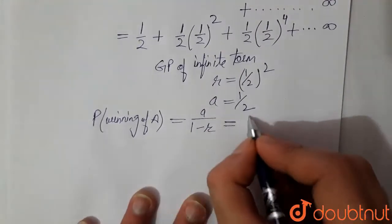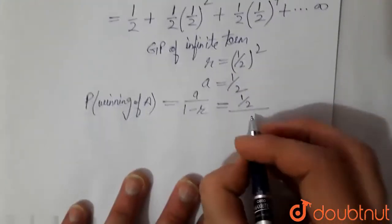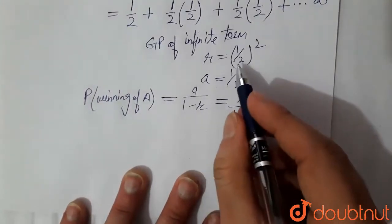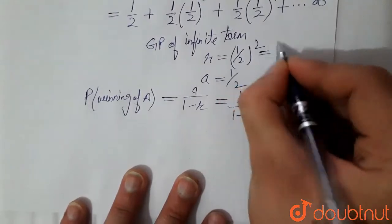So by this formula we get 1 by 2 divided by 1 minus 1 by 4. Okay, R is 1 by 4. So this is 1 by 4.